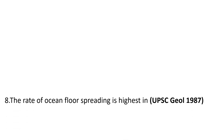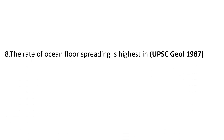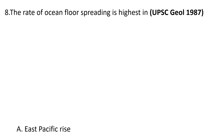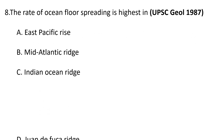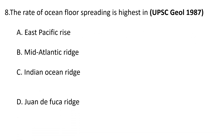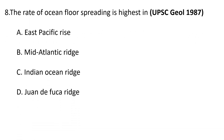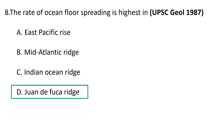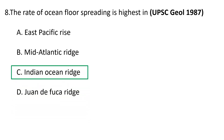Eighth question: the rate of ocean floor spreading is highest in — a) East Pacific Rise, b) Mid-Atlantic Ridge, c) Indian Ocean Ridge, and d) Juan de Fuca Ridge. The correct answer is c) Indian Ocean Ridge, where the rate of ocean floor spreading is very high.